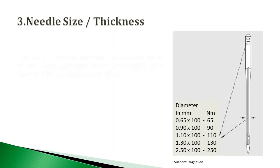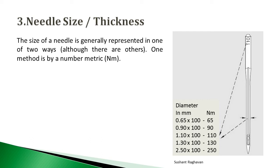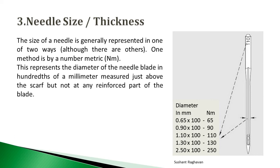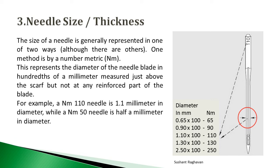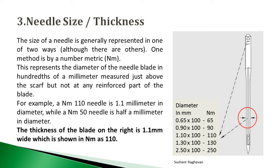Needle size and thickness: the size of a needle is generally represented in one of two ways. One method is by a number metric NM, which represents the diameter of the needle blade in hundredths of a millimeter, measured just above the scarf but not at any reinforced part of the blade. For example, a NM 110 needle is 1.1 mm in diameter, while a NM 50 needle is 0.5 mm in diameter. The blade thickness of 1.1 mm wide is shown as NM 110.